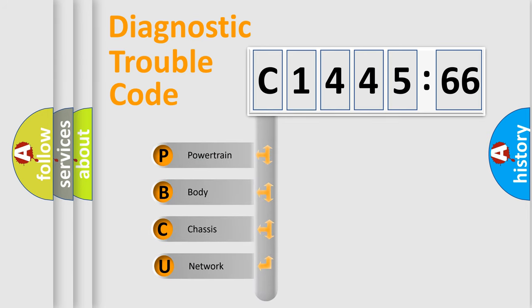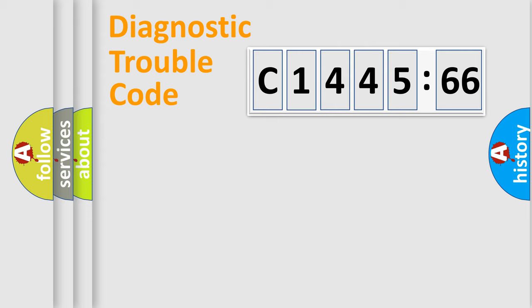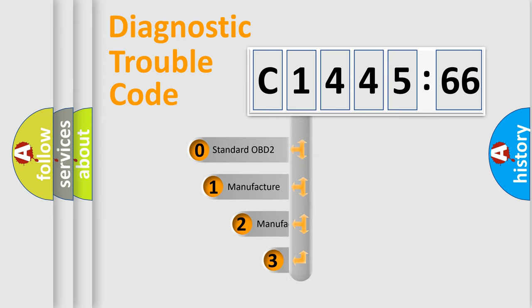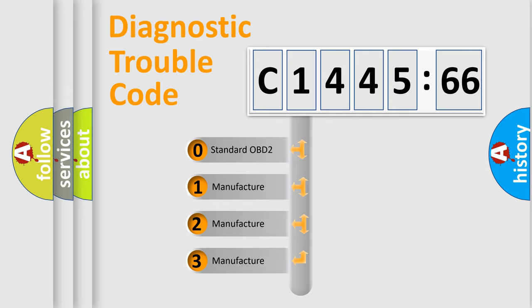First, let's look at the history of diagnostic fault code composition according to the OBD2 protocol, which is unified for all automakers since 2000. We divide the electric system of automobile into four basic units: powertrain, body, chassis, network. This distribution is defined in the first character code.